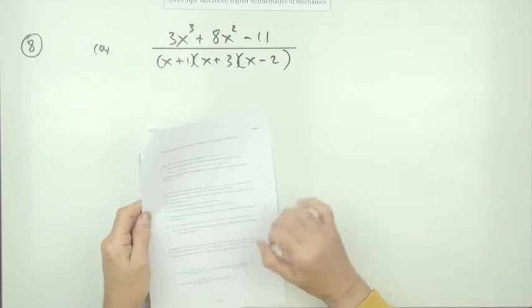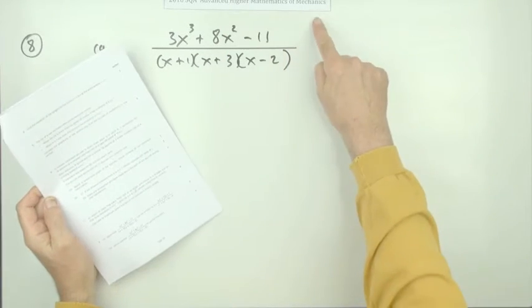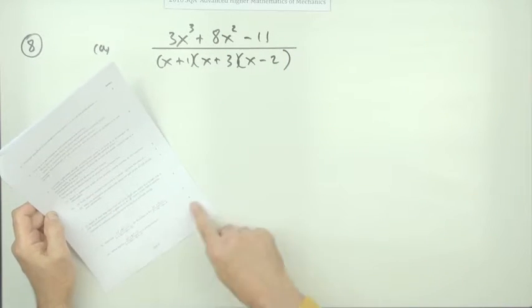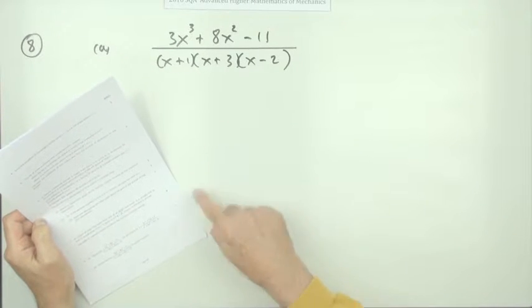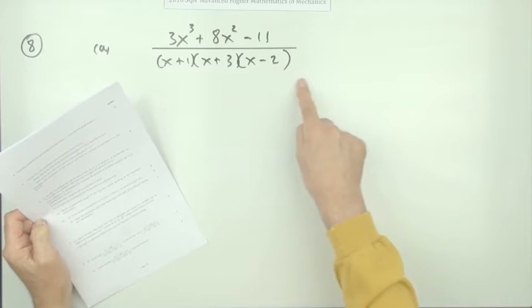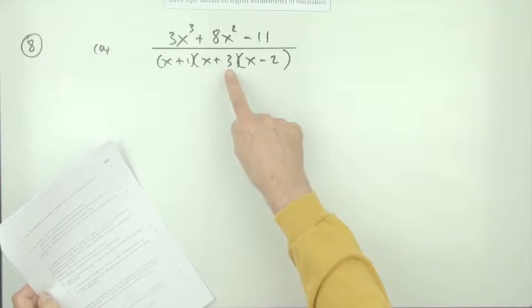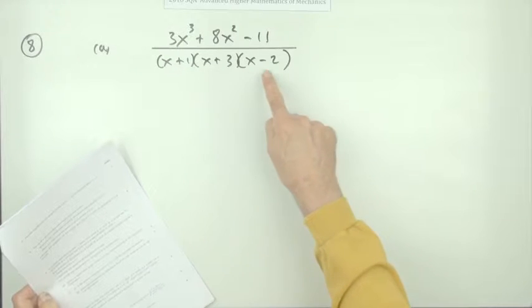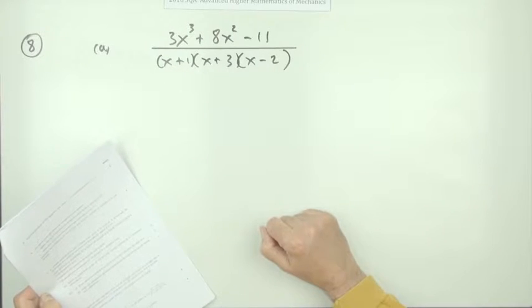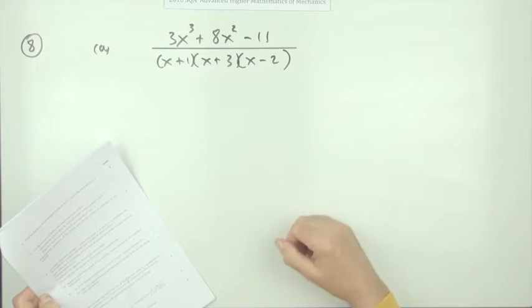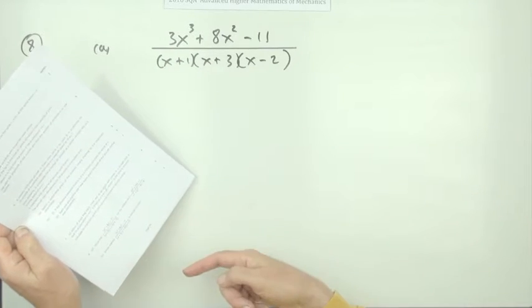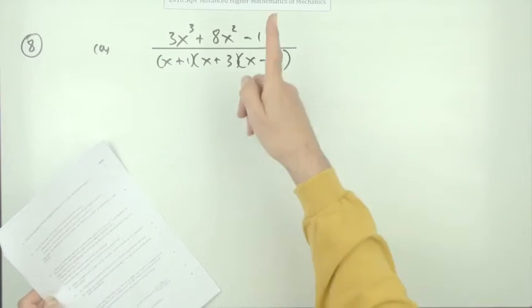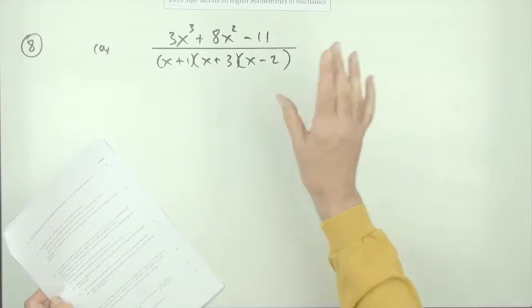Number 8 from the 2016 advanced higher mathematics mechanics exam. Here's a completely non-mechanical question on partial fractions for an awful lot of marks for what it is, because it's really one of the easiest ones you can get where you've just got these nice little completely separate linear factors in the denominator. You've got nice little knockout values you can use. One thing you should notice is they've split it up—they shouldn't have given you split up.